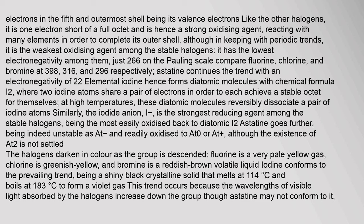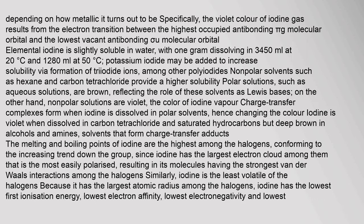Iodine conforms to the prevailing trend, being a shiny black crystalline solid that melts at 114°C. The violet color of iodine gas results from the electron transition between the highest occupied antibonding πg molecular orbital and the lowest vacant antibonding σu molecular orbital. Elemental iodine is slightly soluble in water, with 1g dissolving in 3450 ml of water.